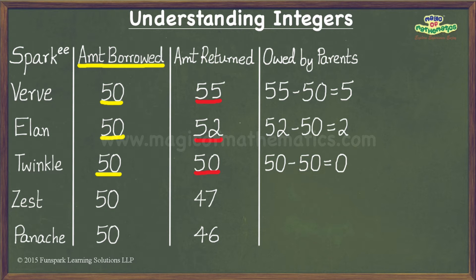The amount of money that Zest returned to his parents, namely 47 sparks, is less than what he borrowed, namely 50 sparks. Hence his parents don't owe him anything. A similar logic applies to Panache also. We saw that Twinkle, Zest, and Panache's parents all owe them nothing, so these three cases look similar. But we know that the amount of money they returned to their parents is not the same, and hence there is definitely a difference between these three cases.